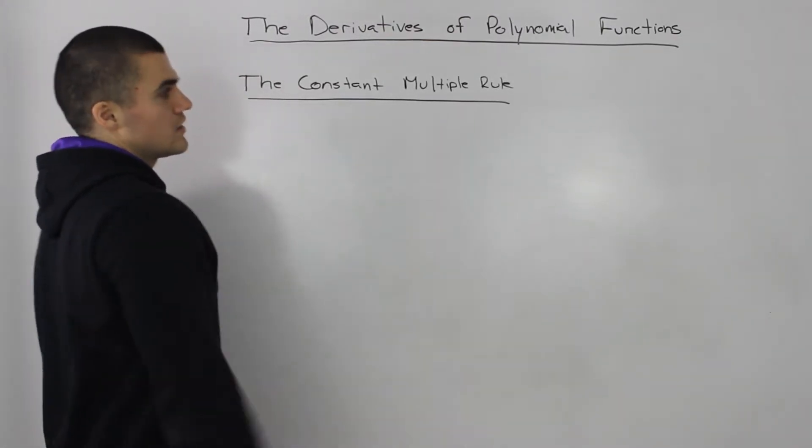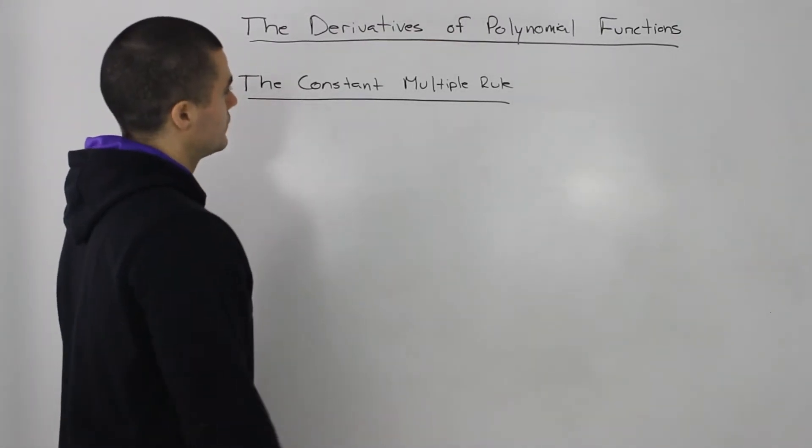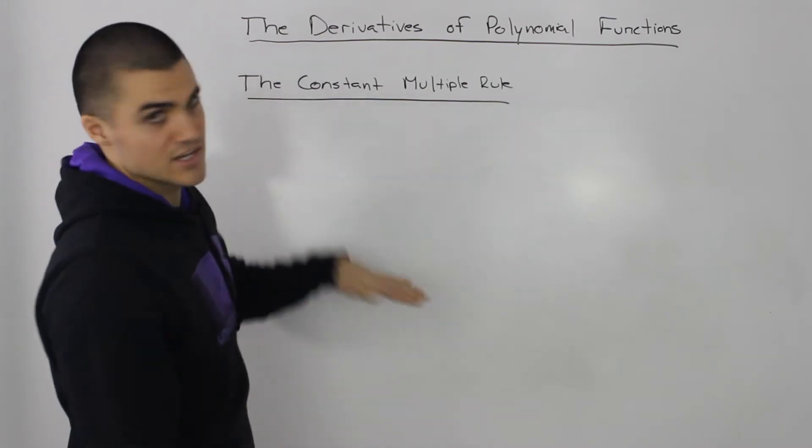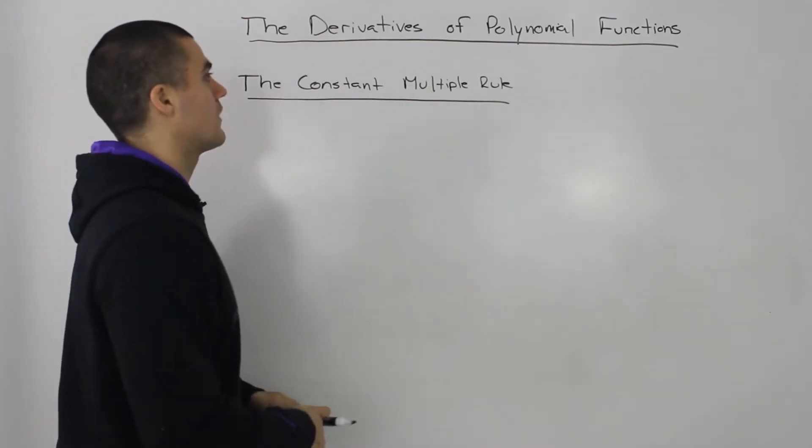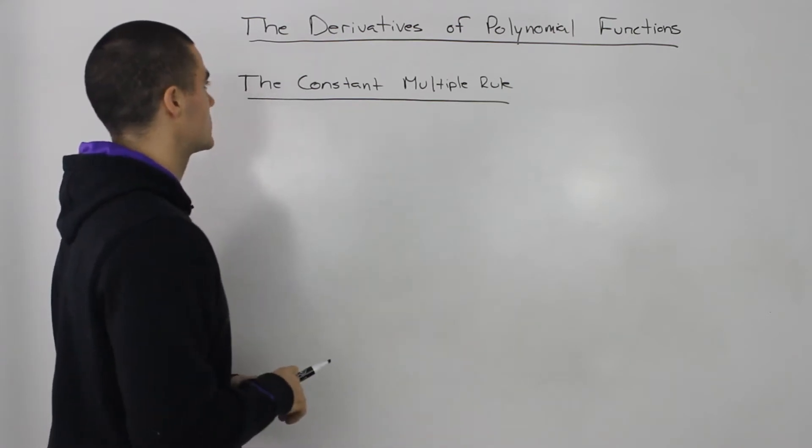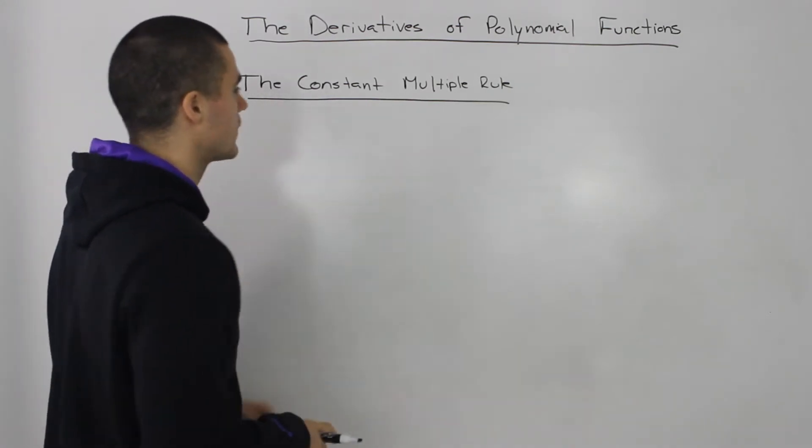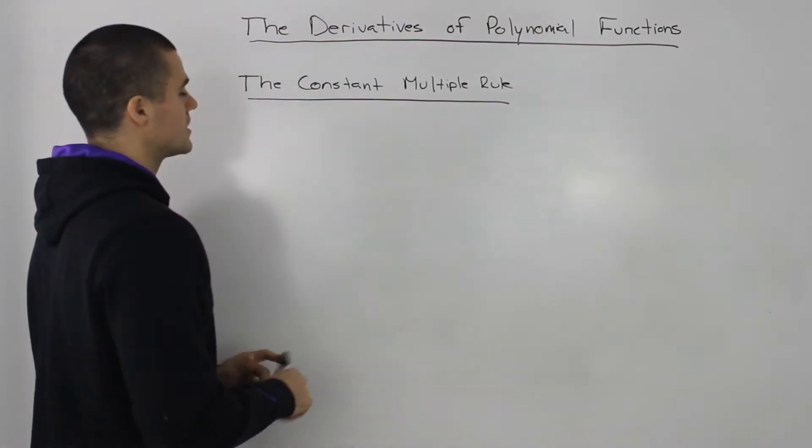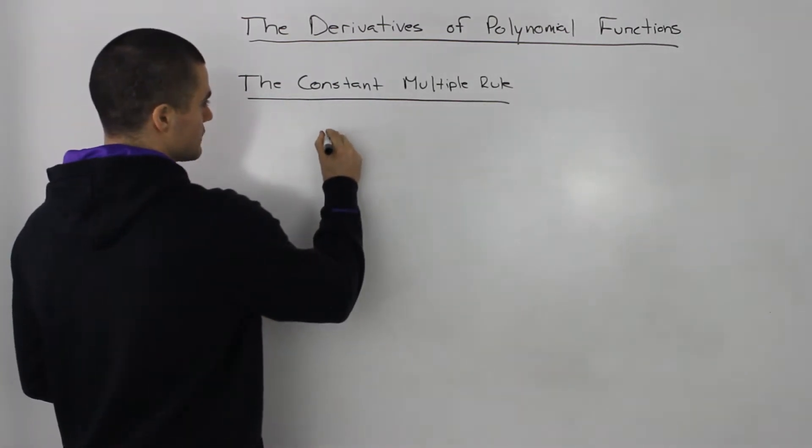All right, moving on to the constant multiple rule. This is just sort of like an extension of the power rule that we did earlier, so if you didn't watch those videos, make sure that you do because you need to know the power rule for this one. The constant multiple rule basically says if you have a function